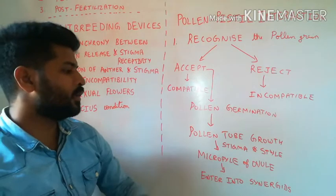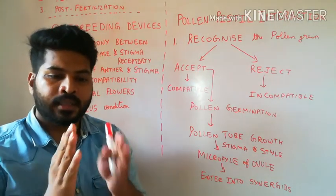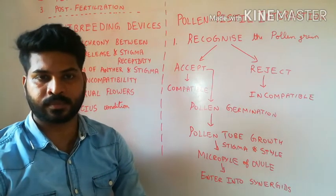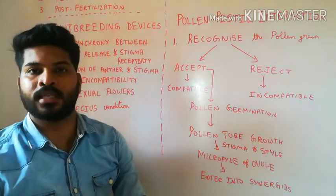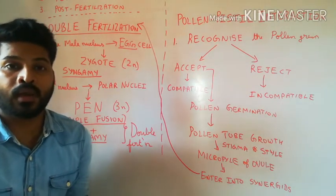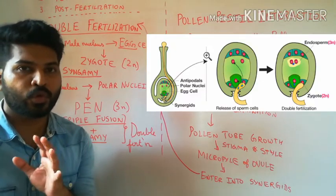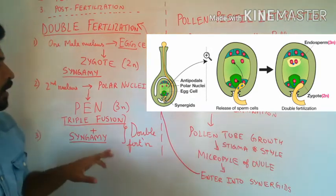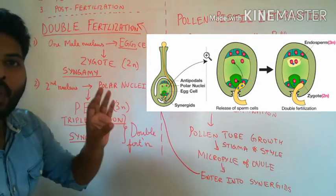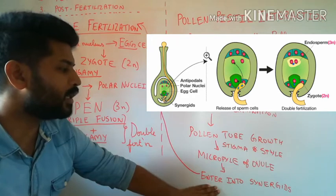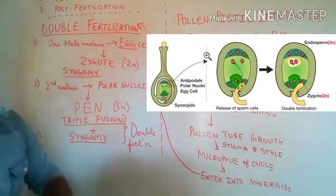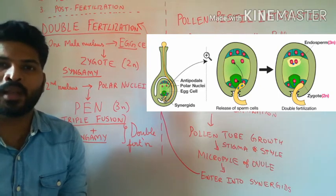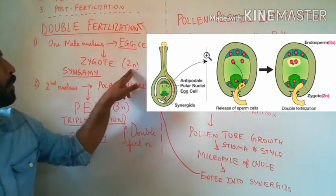Once the pollen tube has entered into the synergid, the pollen tube will burst open, releasing the two male gametes into the synergid. The next step is fertilization. Flowering plants have what is called double fertilization, which is very unique to them — you don't find double fertilization in gymnosperms or lower plants. Once the pollen tube releases the two male nuclei into the synergid, one of the male nuclei fuses with the egg cell. This is what is called syngamy, resulting in the formation of a diploid zygote.